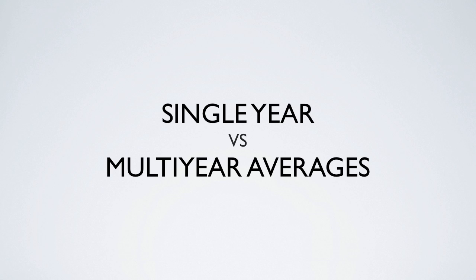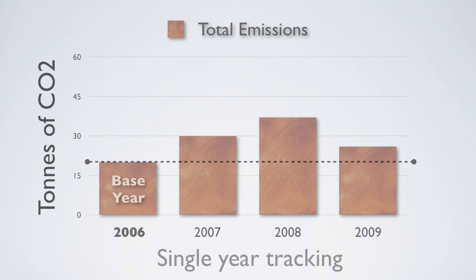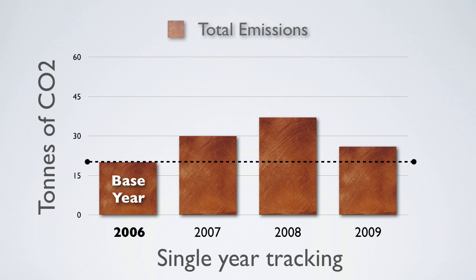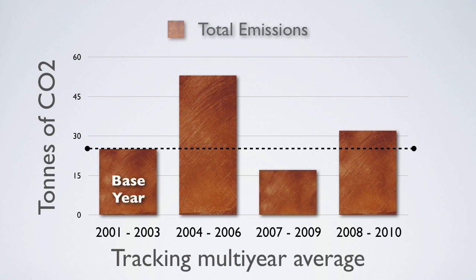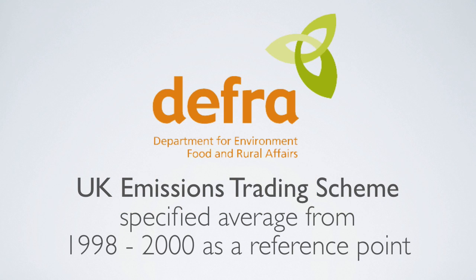Single-Year vs. Multi-Year Averages. When a company sets its base year, it can choose a single year or an average of annual emissions over several consecutive years. A multi-year average is sometimes used to smooth out unusual fluctuations in emissions. For example, the United Kingdom's Emissions Trading Scheme specified an average of emissions from 1998 to 2000 as the reference point for tracking emissions.